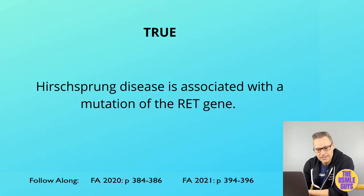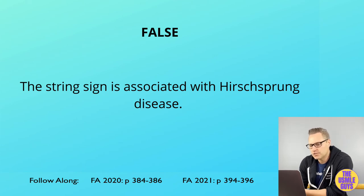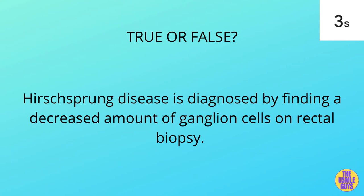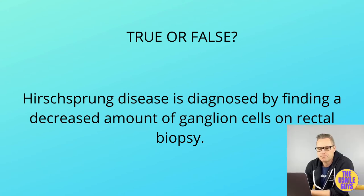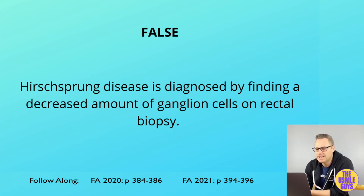A loss-of-function mutation in the RET gene is associated with Hirschsprung disease — that is true. The sign associated with Hirschsprung disease is the squirt sign, characterized by explosive expulsion of feces, not the squeeze sign. Diagnosis is based on a complete absence — not a decrease — of ganglion cells in the rectum on suction biopsy, due to failure of neural crest cell migration. Proximal to the aganglionic segment is a normal segment that becomes dilated.